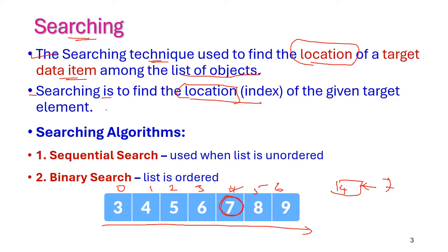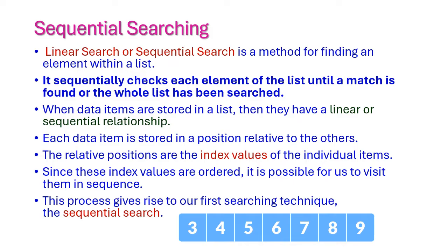When we come to searching, there are two important types. The first one is sequential searching and the second one is binary searching. Sequential searching is used when the list is unordered — that is, we can implement sequential searching on unsorted data items. But when it comes to binary search, we have to implement it only on an ordered, that is sorted, data set.